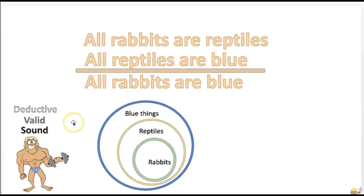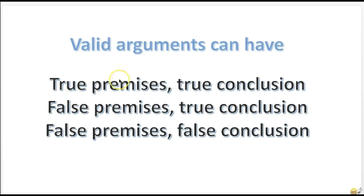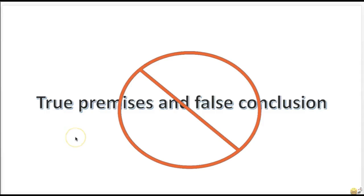One thing to mention: as you'll notice from this argument, validity has nothing to do with truth. You can have a valid argument that is totally false. All that matters is the form of the argument — if we assume they're true, it's impossible for the conclusion to be false. Valid arguments can have true premises and a true conclusion, or false premises and a true conclusion, or false premises and a false conclusion. There is one thing a valid argument cannot have: true premises and a false conclusion. Any deductive argument with true premises and a false conclusion is an invalid argument.